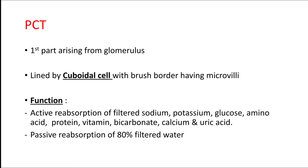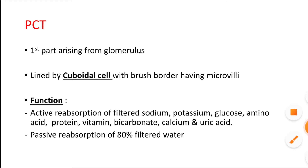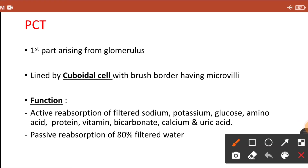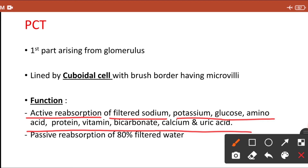The glomerulus opens into the proximal convoluted tubule, which is the first part arising from the glomerulus. It is present in the cortex and is lined by cuboidal epithelial cells with a brush border having microvilli. The main function of the PCT is active reabsorption of filtered sodium, potassium, glucose, amino acids, proteins, vitamins, bicarbonate, calcium, and uric acid, regulating electrolytes and micronutrients. It also passively reabsorbs 80% of the filtered water.